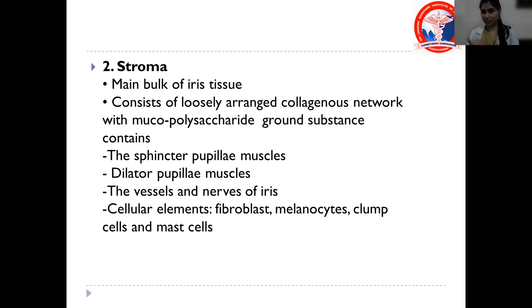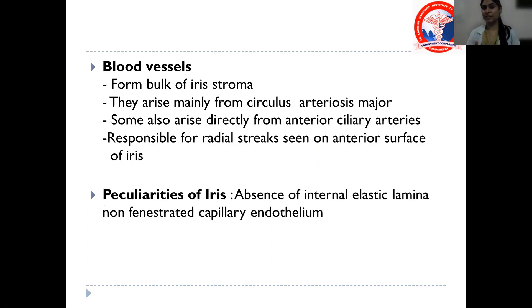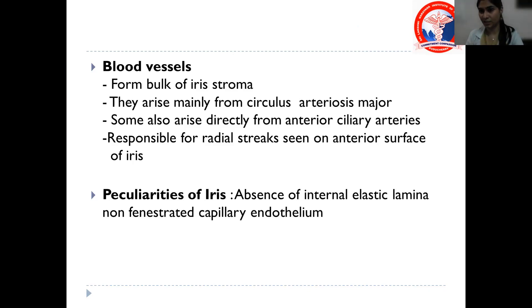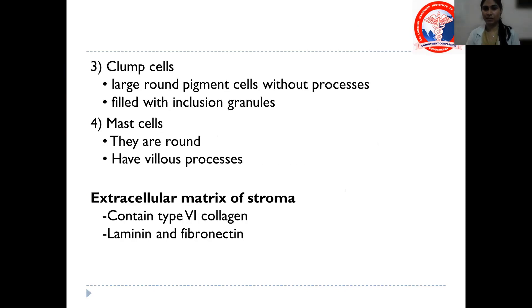In summary, the stroma forms the main bulk of the tissue, intermixed with a collagenous network and mucopolysaccharides as ground substance. It contains the sphincter and dilator pupillary muscles, blood vessels arising mainly from the circulus arteriosus major, and nerves. Blood vessels lack an internal elastic lamina and have non-fenestrated capillary endothelium. Cellular elements include fibroblasts, melanocytes, clump cells, and mast cells. The extracellular matrix is made up of type 6 collagen.